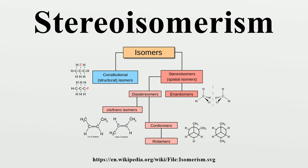However, it does not represent the transition state for this process because there are lower energy pathways. There are some molecules that can be isolated in several conformations due to large energy barriers between different conformations — 2,2',6,6'-tetrasubstituted biphenyls can fit into this latter category. Atropisomers are stereoisomers resulting from hindered rotation about single bonds where the steric strain barrier to rotation is high enough to allow for the isolation of the conformers.